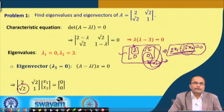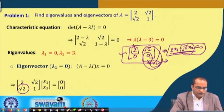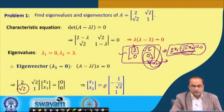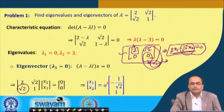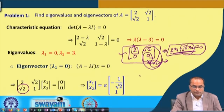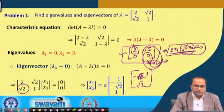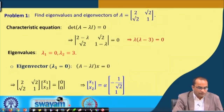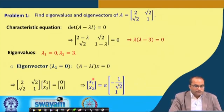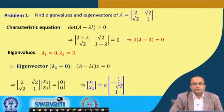Taking x₂ as the free variable alpha, x₁ is minus 1 over square root 2 times alpha. Multiplying through by square root 2, we can take the eigenvector as (minus 1, square root 2) or equivalently any nonzero scalar multiple of it. So the eigenvector corresponding to lambda 1 equals 0 is (minus 1, square root 2).